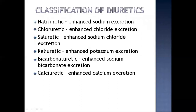Now we will see the classification of diuretics based on the ion they excrete: natriuretic (enhances sodium excretion), chloruretic (enhances chloride excretion), saluretic (enhances sodium and chloride excretion), caluretic (enhances potassium excretion), bicarbonate-uretic (enhances sodium bicarbonate excretion), and calciuretic (enhances calcium excretion).